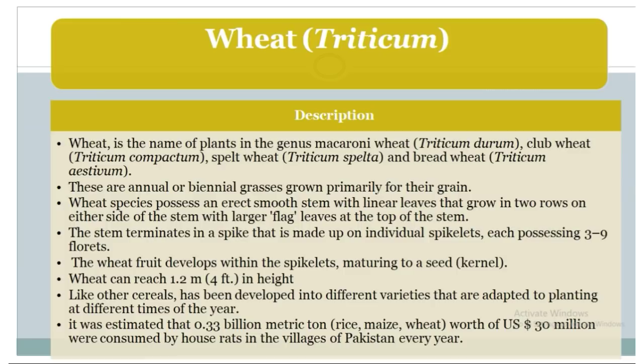Vertebrate pests of wheat (Triticum) include field rats, moor rats, bandicoot rats, and birds such as sparrows.